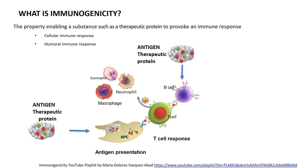Or the macrophages. I encourage you to see the TH phenotype YouTube video that I recently posted that explains in more detail this response. For this particular talk on immunogenicity, the important point is that an antigen-presenting cell — which could be a B cell or a dendritic cell — activates the T cell, and this T cell will differentiate into helping the activation of the effector cells that will deal with the drug. This is what we know as the cellular immune response.